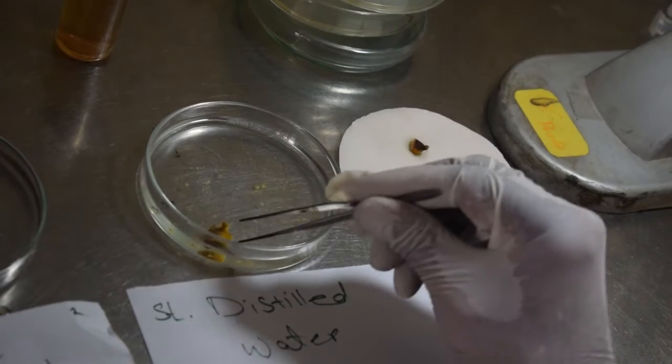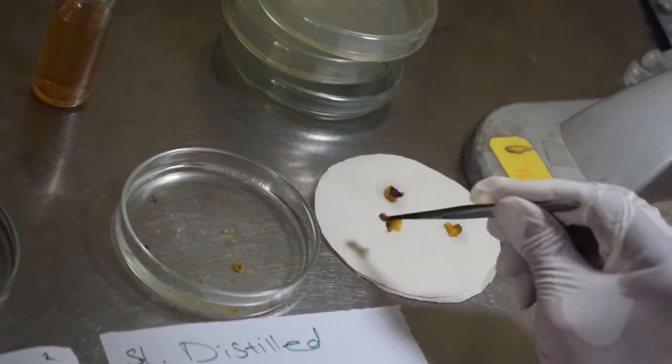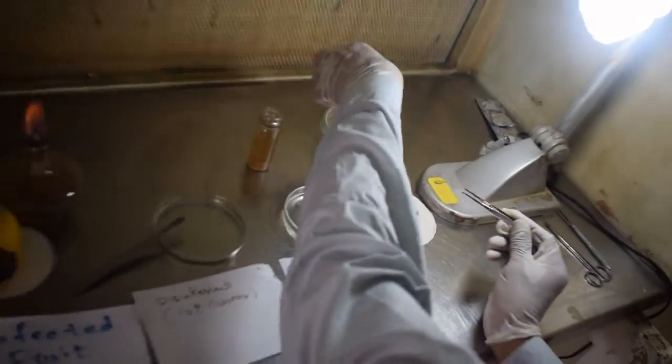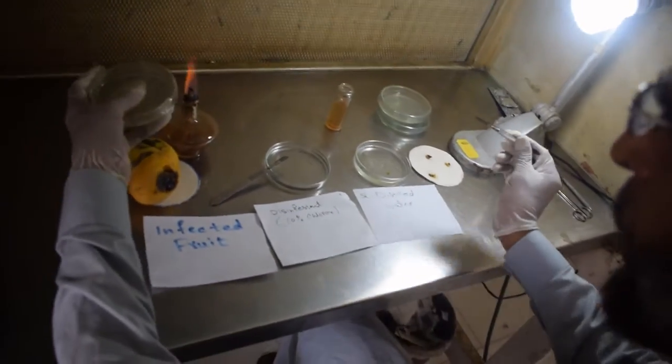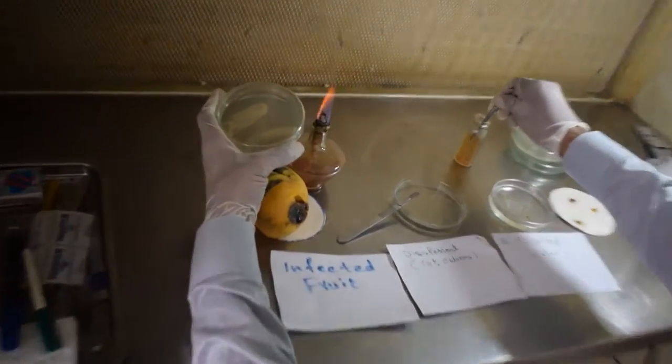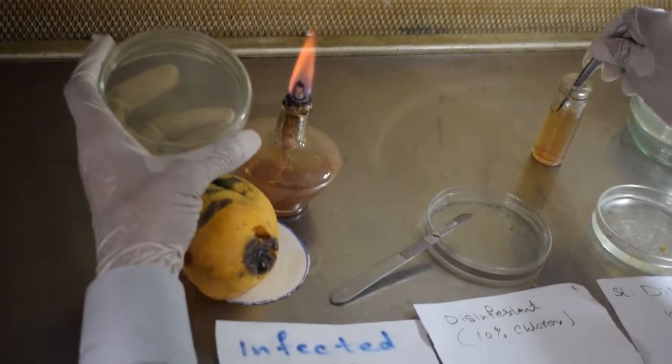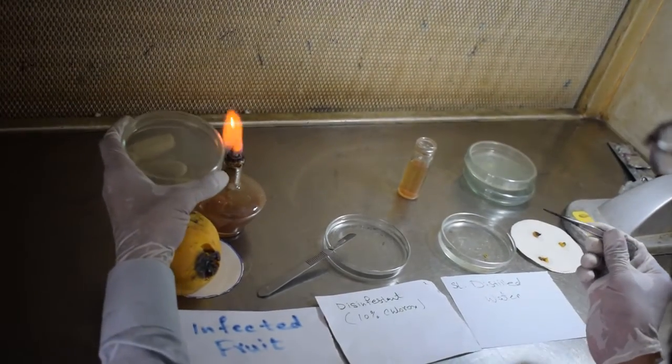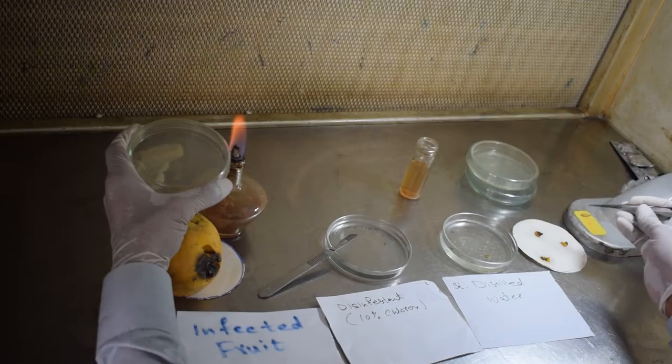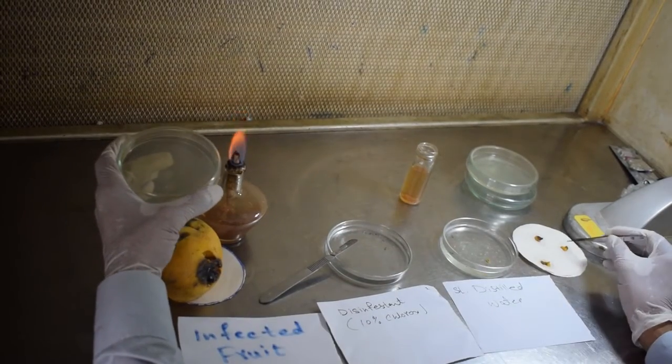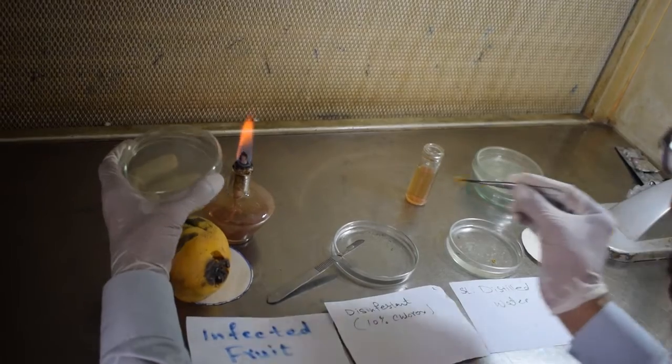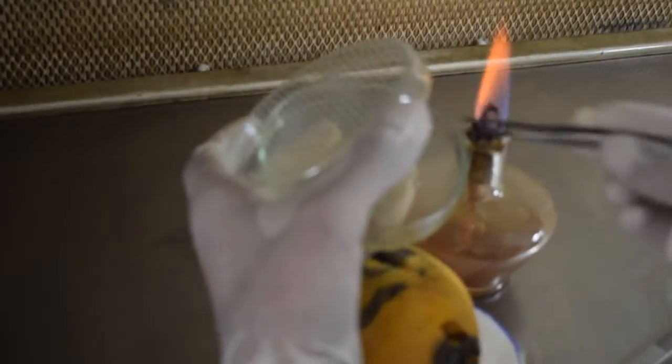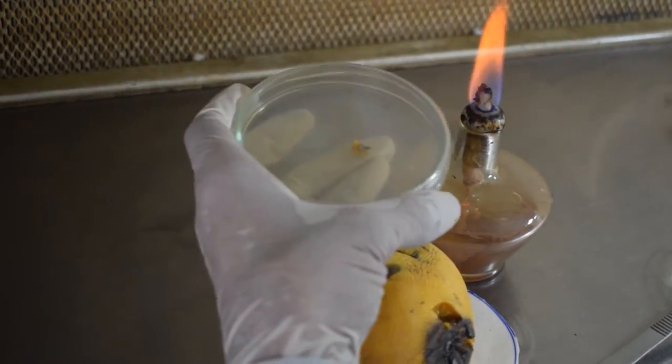For that, we should now open these petri plates very carefully with the left hand, with the thumb and finger. We should open it near the burner so that any contaminant may not enter in the petri plate. I am placing it in the middle of the plate, and it is put here.